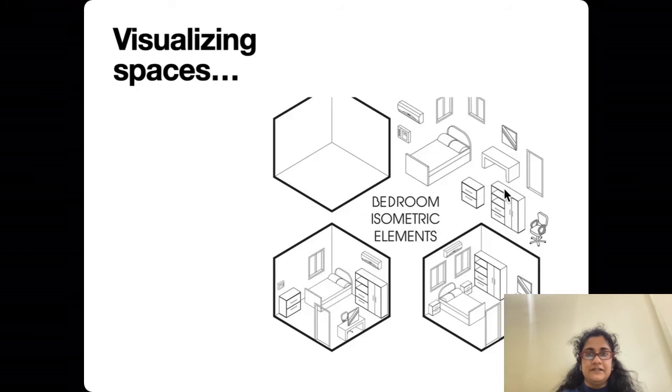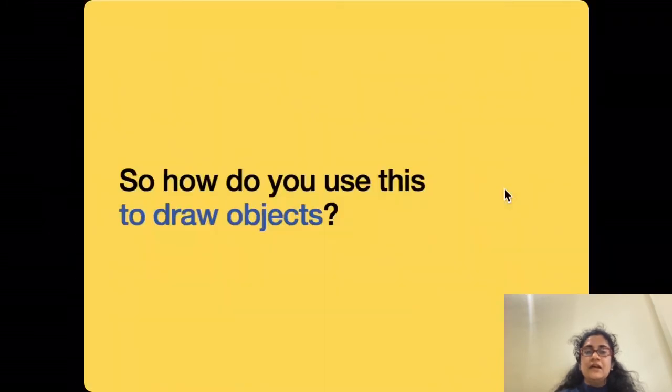How do you use this to draw objects? If you remember in our previous session, we had broken things down into three parts: the first is starting with your basic shapes and construction lines, then adding in the shapes that define the object, and finally drawing the outline and the details in the darkest lines.